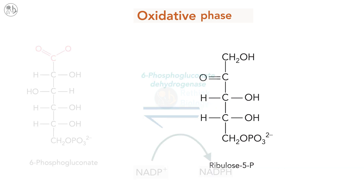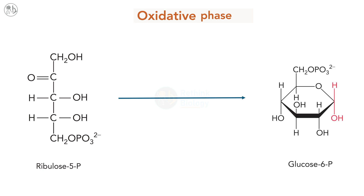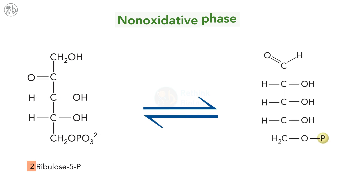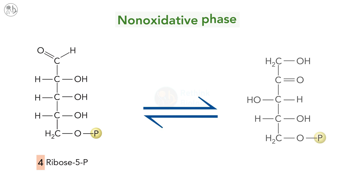In cells that require high levels of NADPH for biosynthetic reactions, the ribulose 5-phosphate produced in the oxidative phase needs to be converted back into glucose 6-phosphate. This involves enzymes in the non-oxidative phase of the pentose phosphate pathway. In the first set of reactions, 2 molecules of ribulose 5-phosphate are converted into 2 molecules of ribose 5-phosphate by the enzyme ribose 5-phosphate isomerase. Then 4 molecules of ribulose 5-phosphate are converted into 4 molecules of xylulose 5-phosphate by the enzyme ribulose 5-phosphate epimerase.